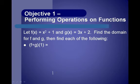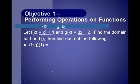Objective 1: performing operations on functions. Let f of x equal x squared plus 1 and g of x equal 3x plus 2. Find the domain for f and g and then find each of the following. The domain of f is all real numbers because there are no fractions and no square roots. Same for g of x — no fractions, no square roots — so the domain of g is also all real numbers. Therefore, the domain for all these combined functions is all real numbers.